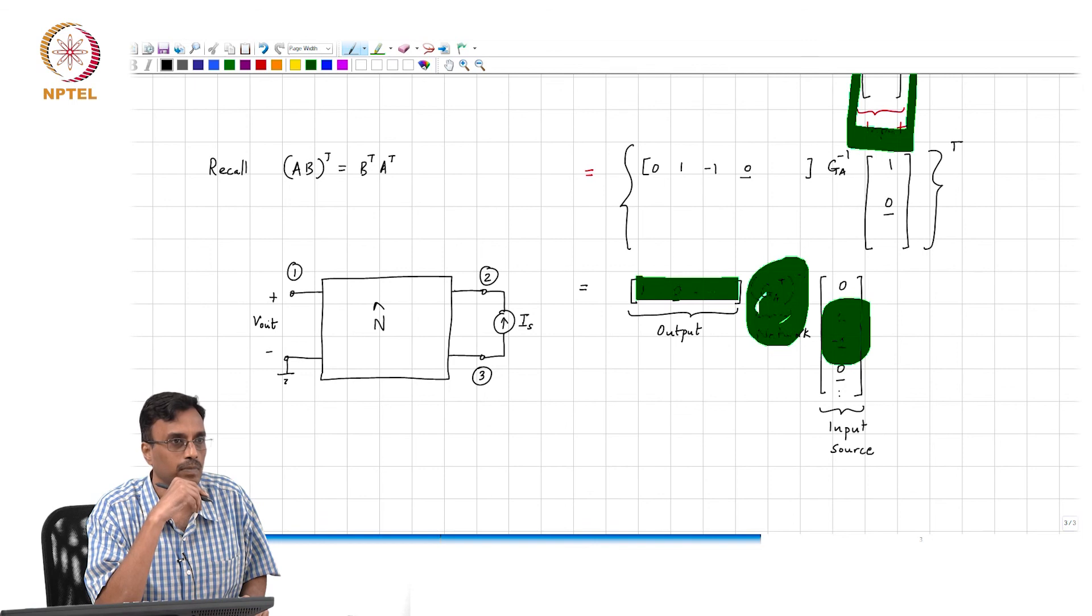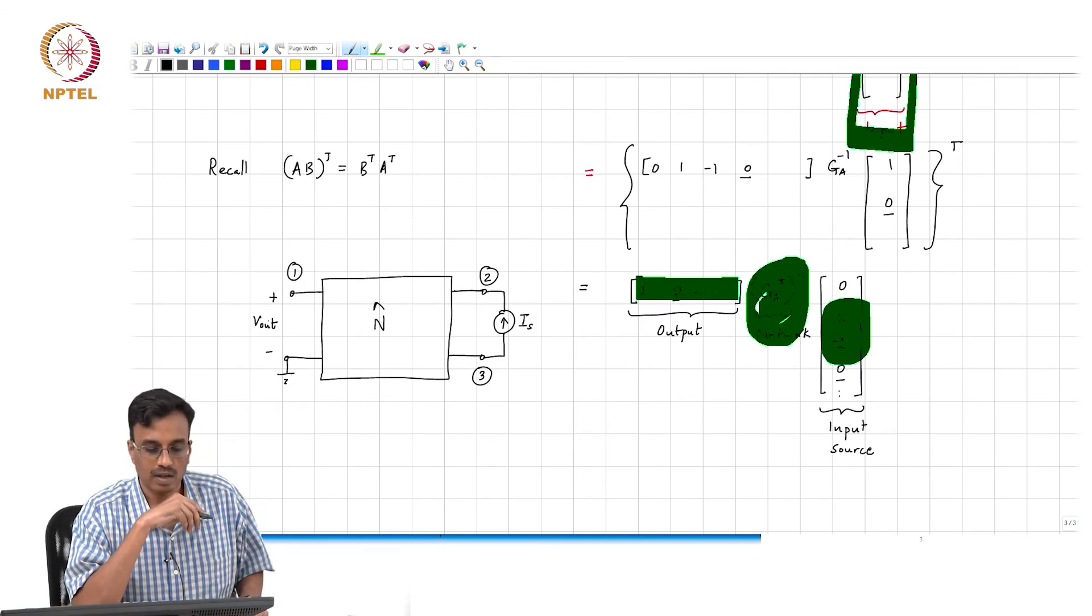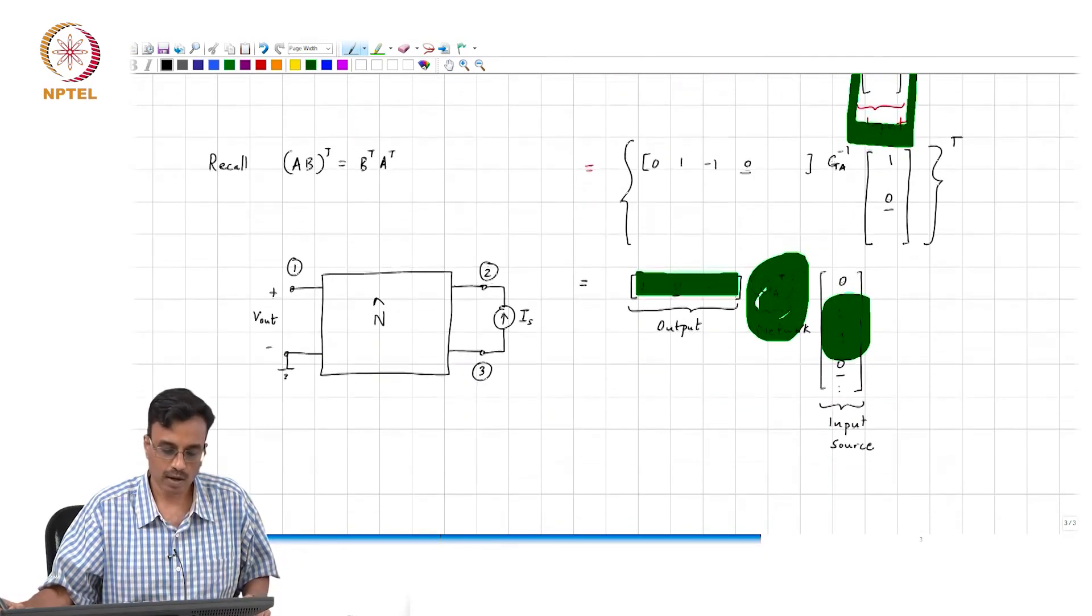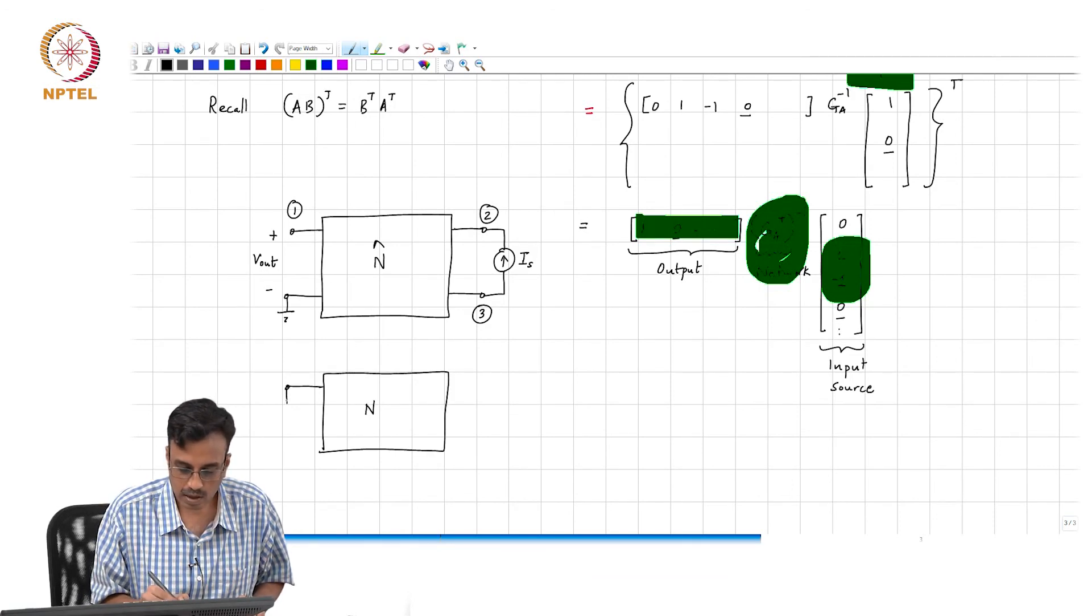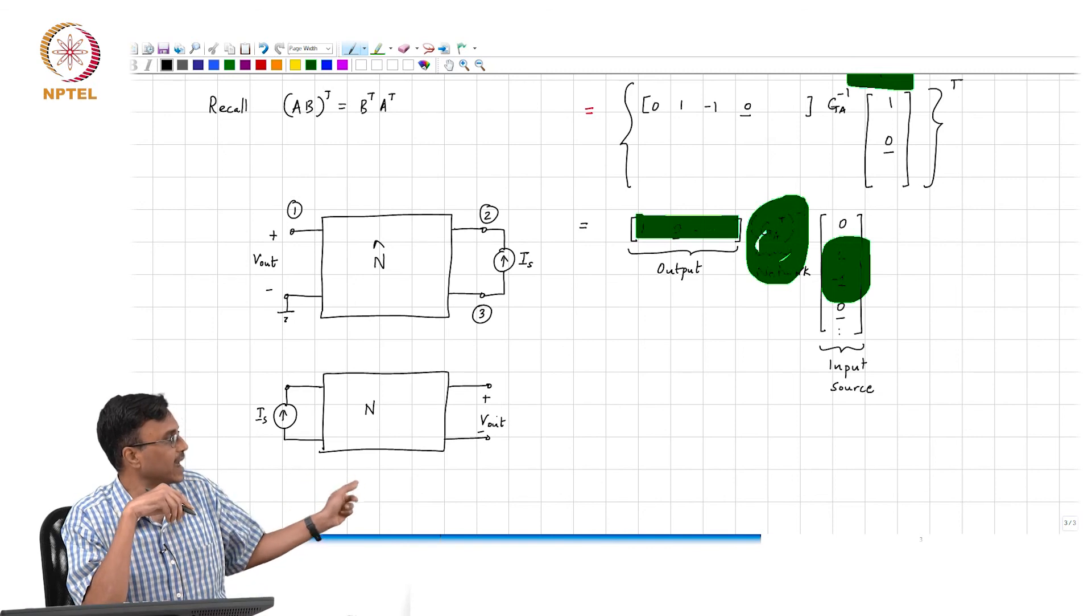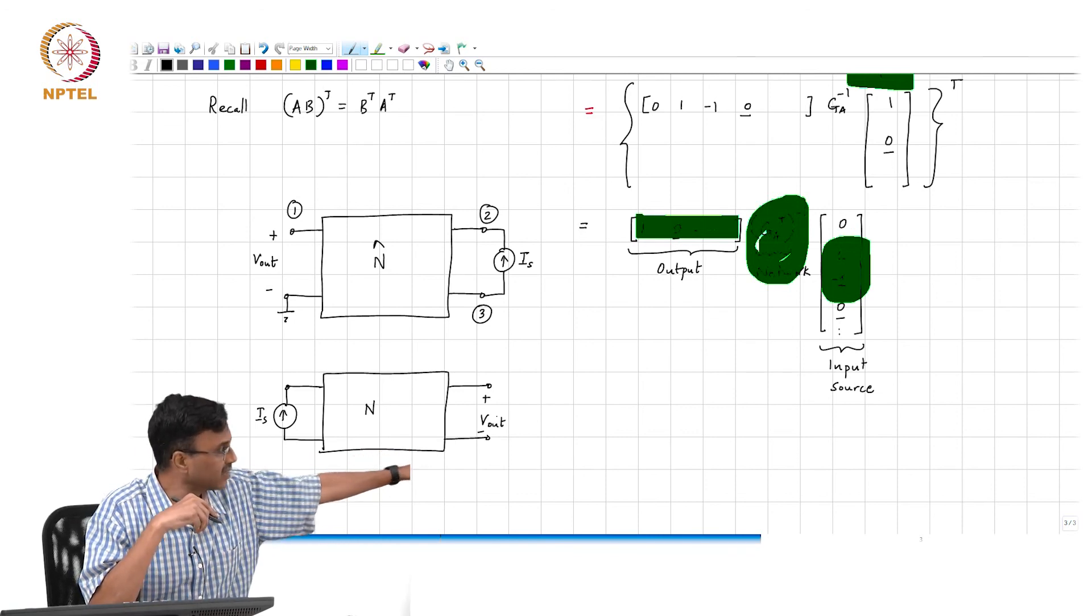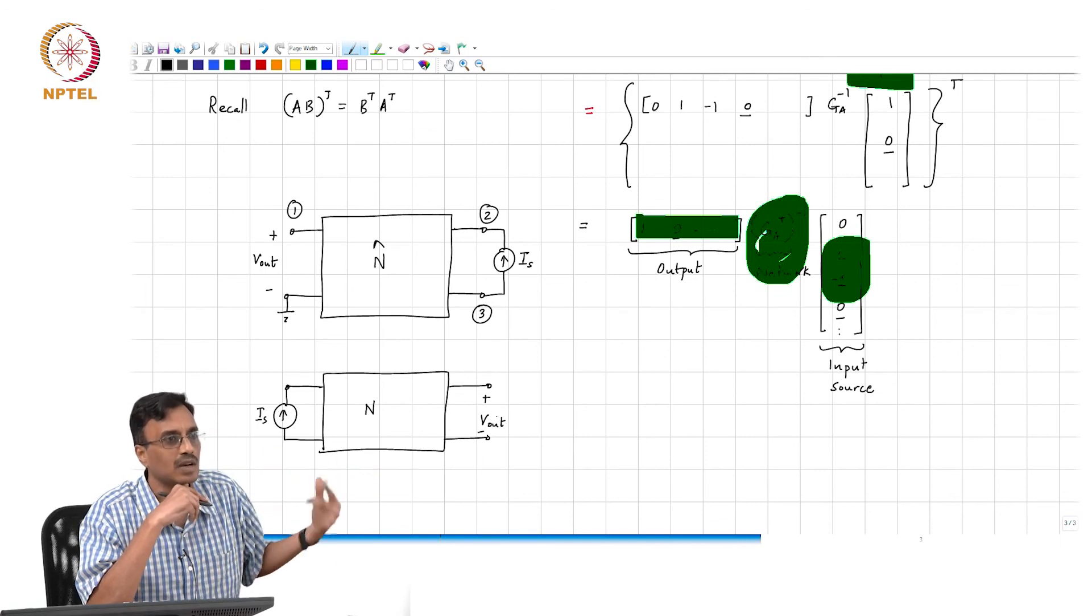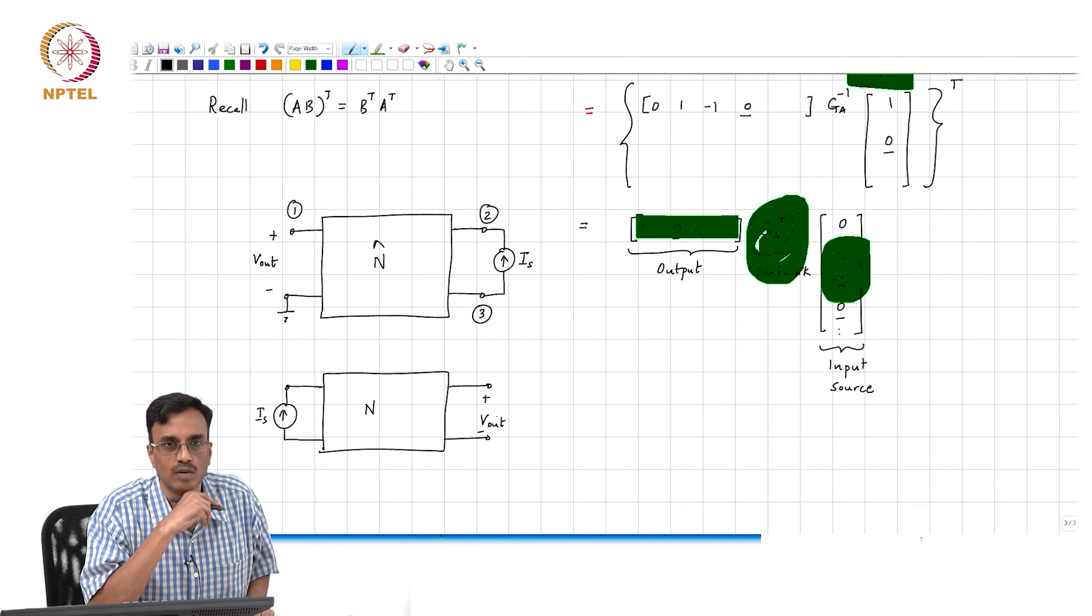Is this clear? So if you want, in other words, what is the moral of the story? If you have an original network N and you inject a current I_s here and measure V_out here, you can get the same transfer by injecting current into the output port of a network which is not necessarily the same as N, but whose MNA matrix is simply the transpose of the MNA matrix of the original network. Is this clear so far?